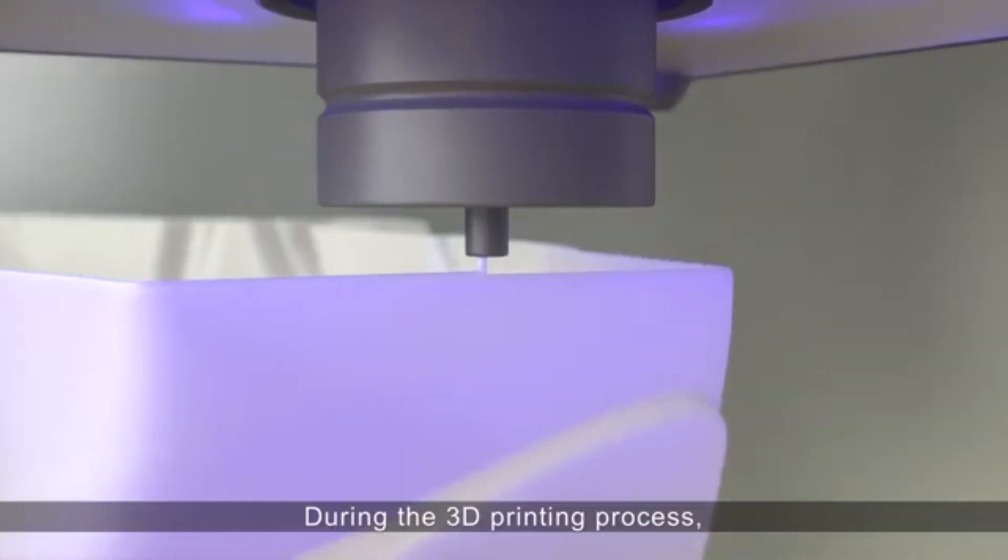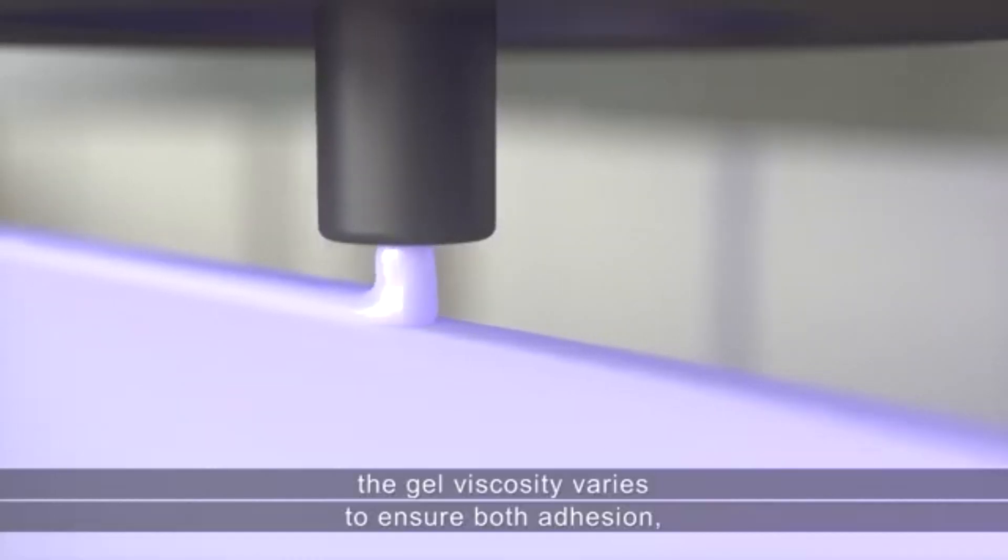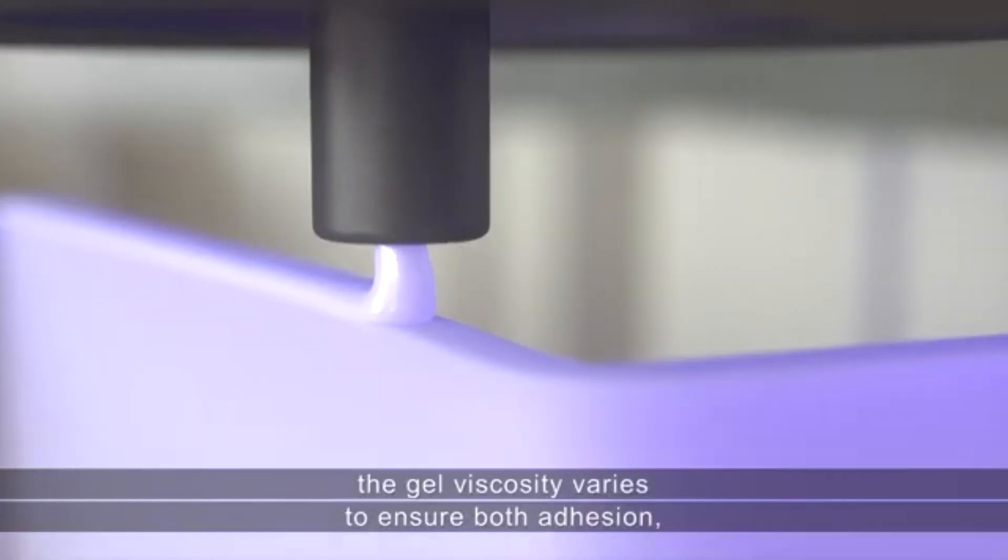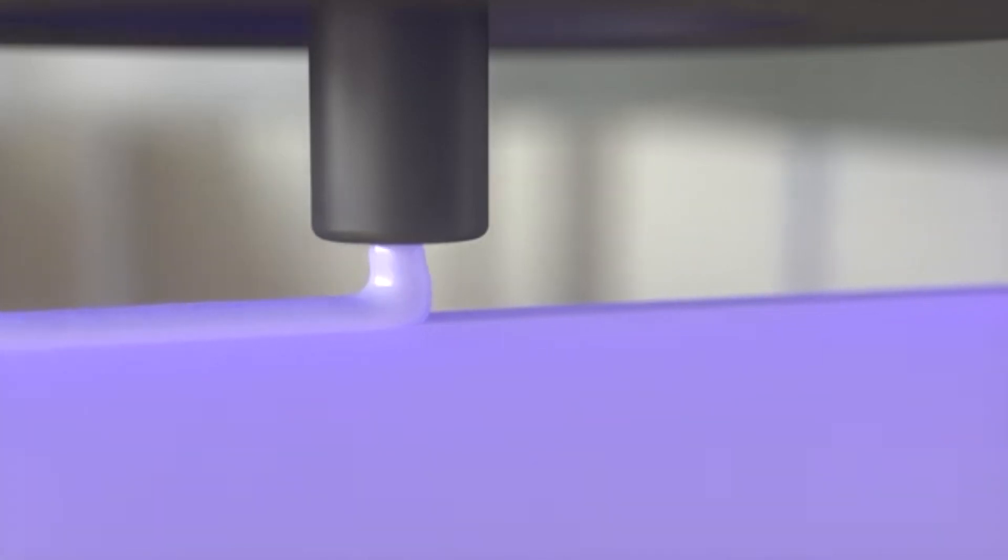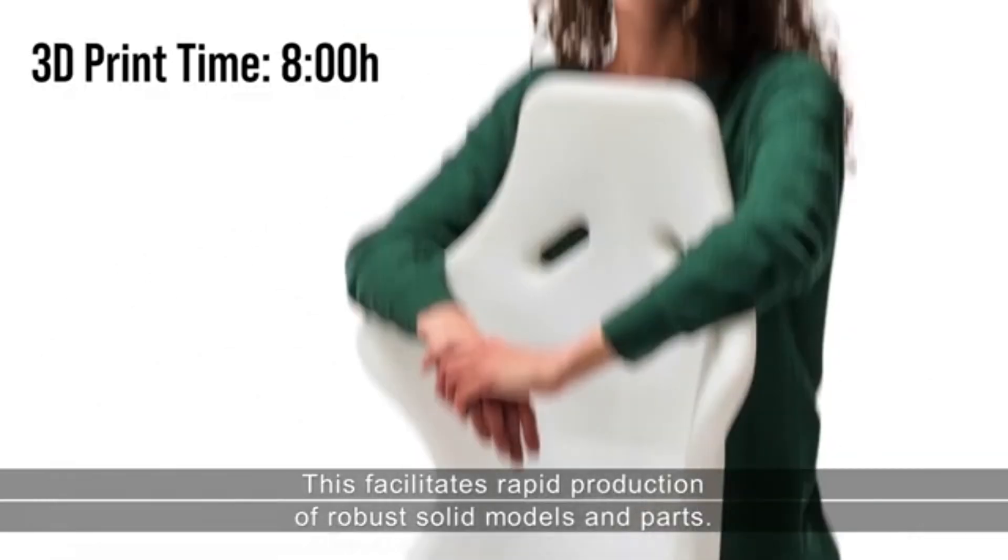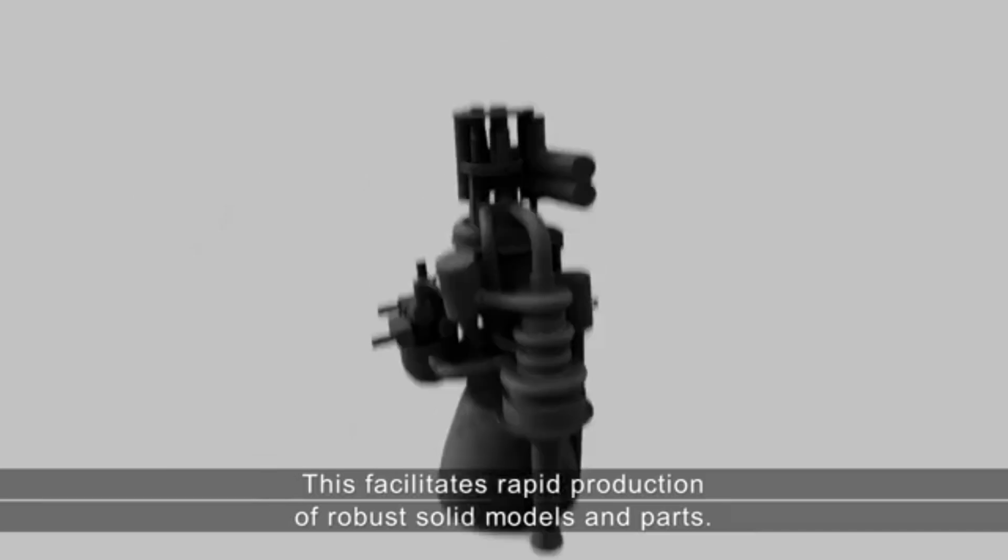During the 3D printing process, the gel viscosity varies to ensure both adhesion and perfect bonding with the help of UV curing. This facilitates rapid production of robust solid models and parts.